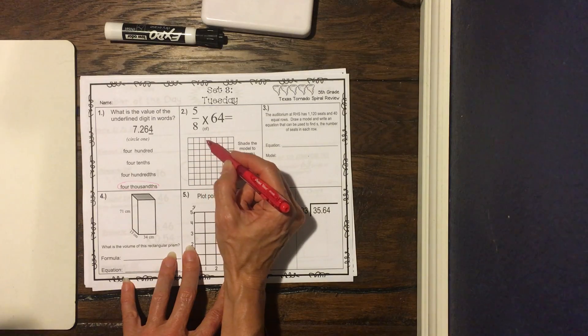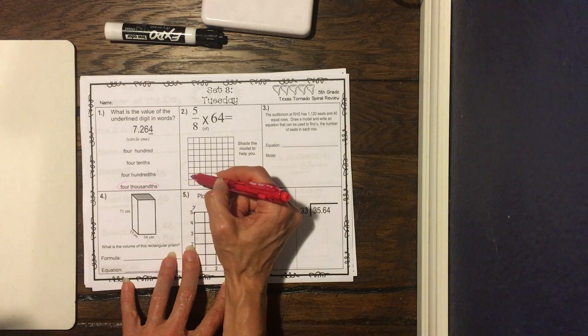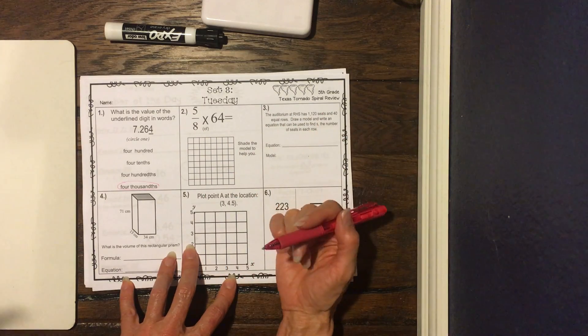So this is one, two, three, four, five, six, seven, eight, times one, two, three, four, five, six, seven, eight. So that would be eight times eight, which is 64.